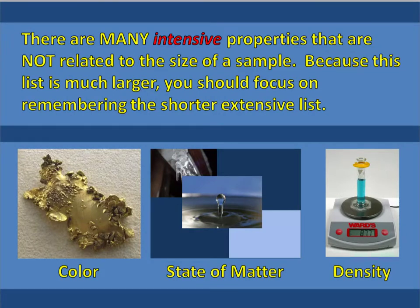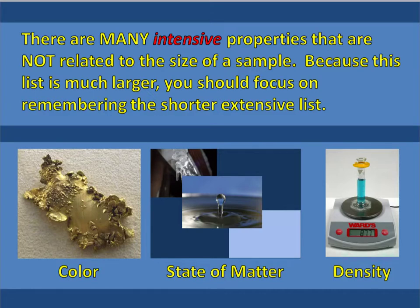Now we're done with all of the extensive properties — the ones that are related to size and amount. These are called intensive properties, the ones we're about to talk about, and they are not related to the size of a sample. They have nothing to do with how much of the sample you have or how big a piece of the sample you have. Because this list is longer, really remember the extensive properties list and then just be able to identify what some of these key intensive properties are. Examples of intensive properties include color, the state of matter — so if it is a solid, liquid, or gas — and density.